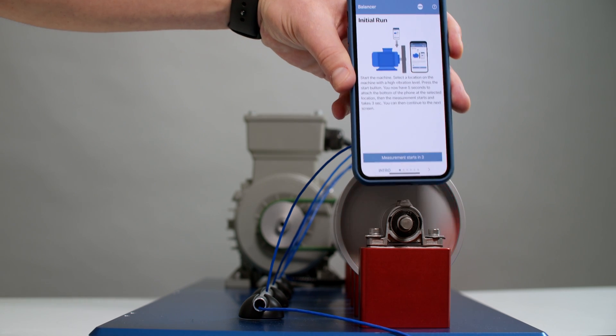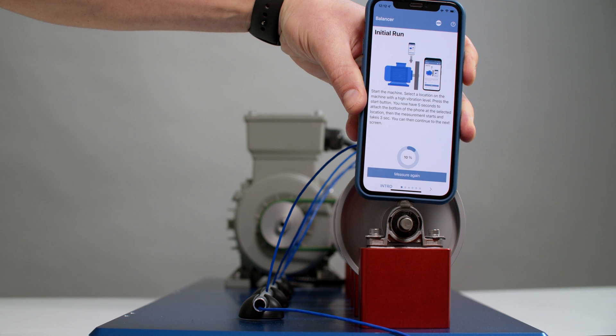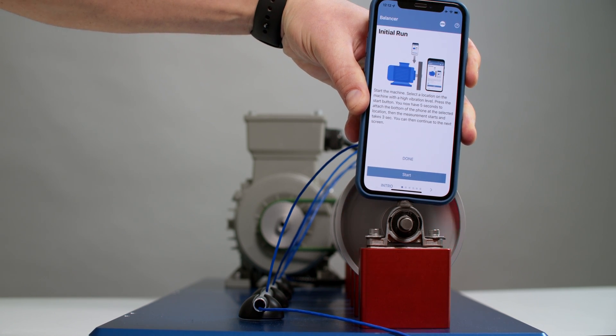Press start on the app and attach the phone by the bottom side to measured machine. Be sure you use the same pressure on the phone during all measurements.